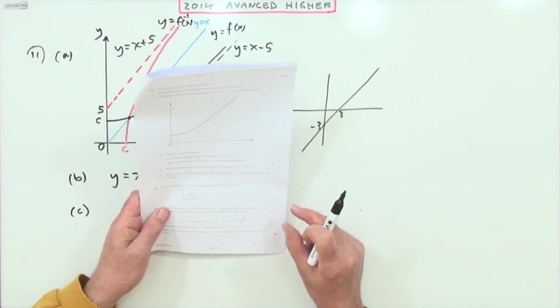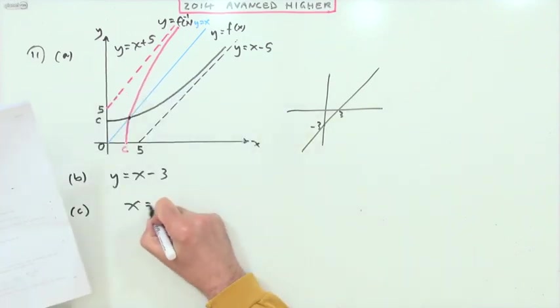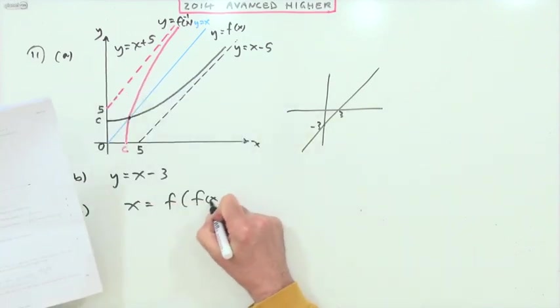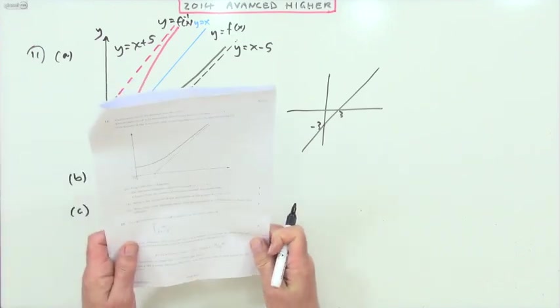Part c: why does your diagram show the equation x equals f(f(x)) has at least one solution?